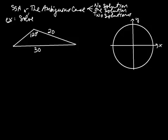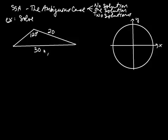Now let's look at a side-side-angle situation. SSA is called the ambiguous case because the angle is not between the two sides — if it were, that would be side-angle-side. With SSA, you could have no solution, one solution, or even two triangles that satisfy all the given conditions.